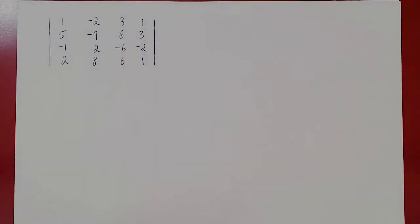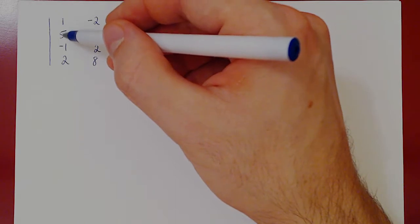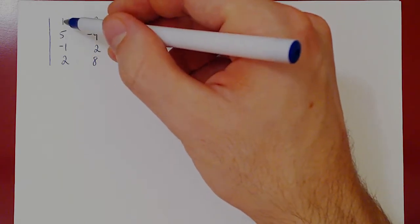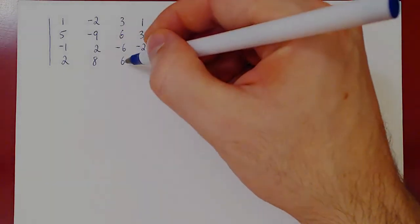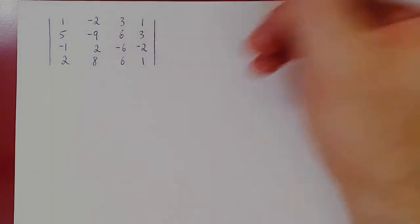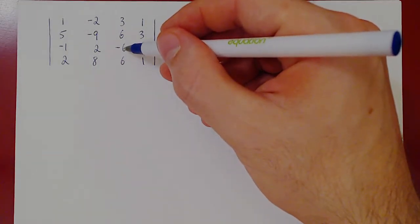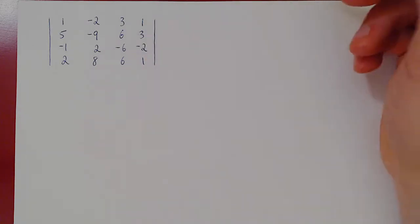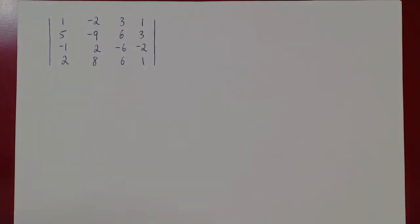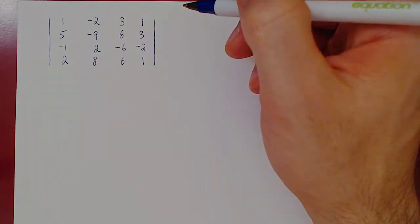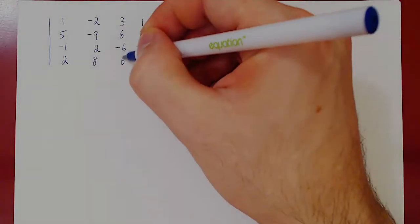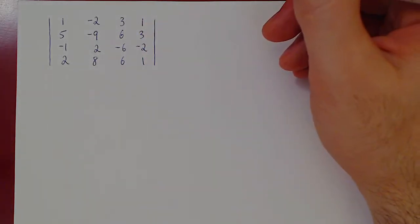If you look at this matrix, there are a lot of different angles of attack to get some zeros. You have a leading 1 here, so you could do row 2 minus 5 row 1, row 3 plus row 1, row 4 minus 2 row 1. Or we could look at this column — we have 6, negative 6, 6, and positive 3, so we could do row 4 plus row 3, row 2 plus row 3, and kill the negative 6 with the positive 3. Let's use this 3 to kill all of the 6's.